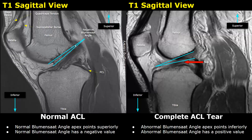In a normal case, when we draw these two lines they will always meet at this point, and the apex of the angle will point superiorly. In normal cases, these two lines will not meet down here — they will meet up here. The apex of the angle will face superiorly.